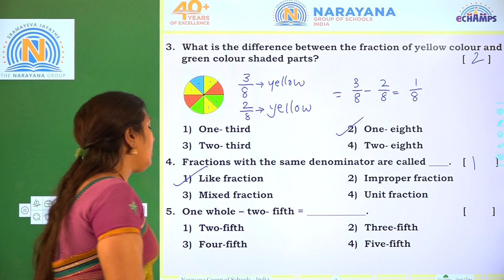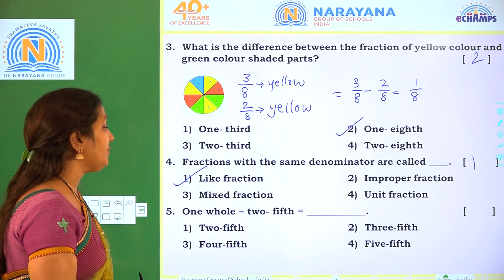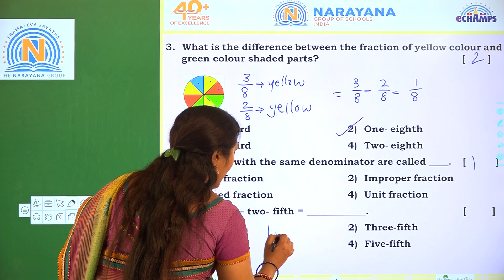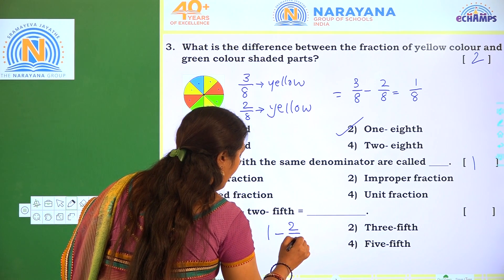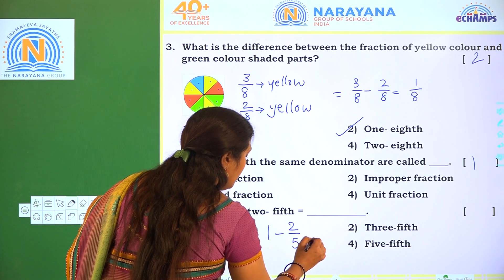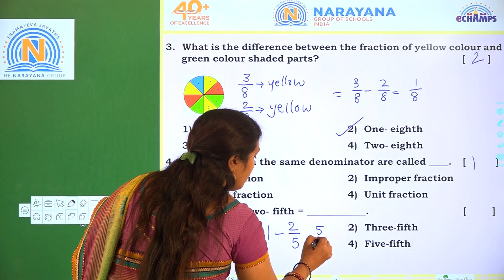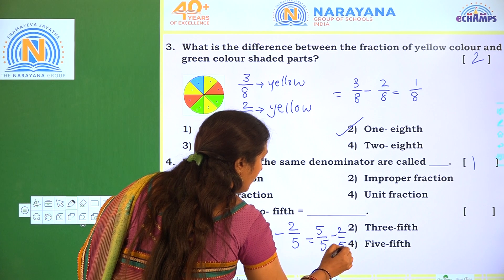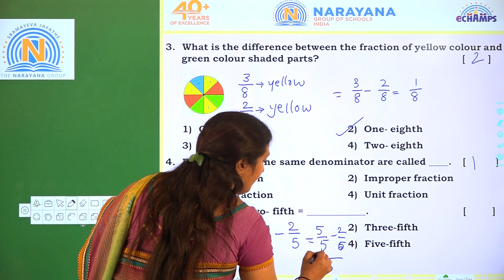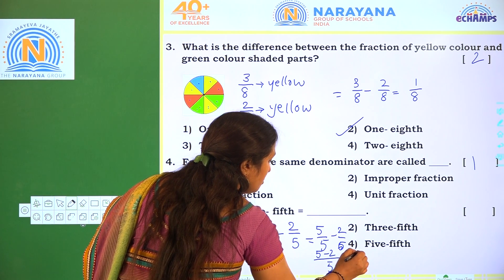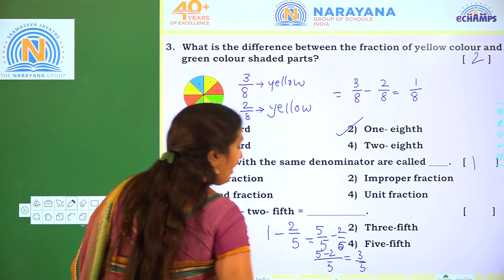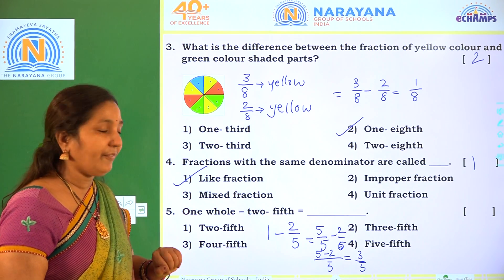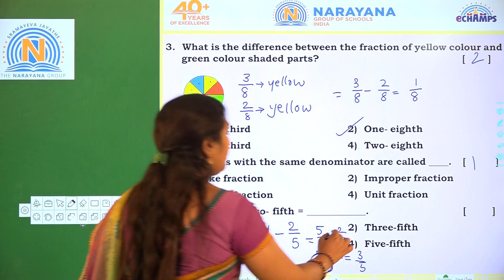Next one. 1 whole minus 2 fifth equals dash. 1 whole means 1, minus 2 fifth means 2 by 5. So 1 whole we can write as 5 by 5, minus 2 by 5. Common denominator, so we subtract the numerators: 5 minus 2 is 3 by 5. 3 by 5 we can read as 3 fifth. The correct option is Option 2.